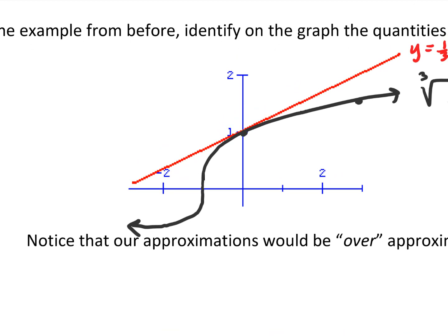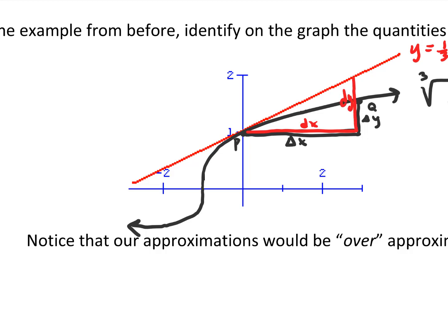Let's go out a little way so we have some distance to look at. Calling these points p and q: this distance is delta x, this distance is delta y. And for the same points, there's dx — the change along the tangent line — and dy is this length from p up to the tangent line.